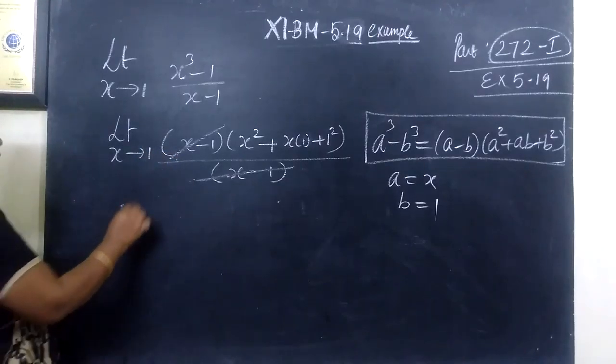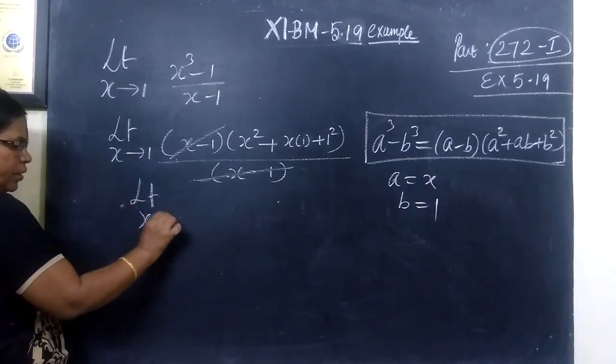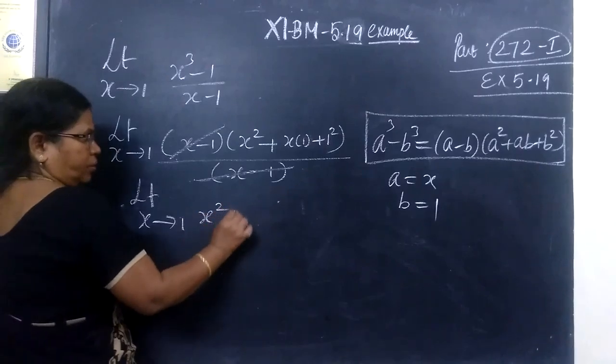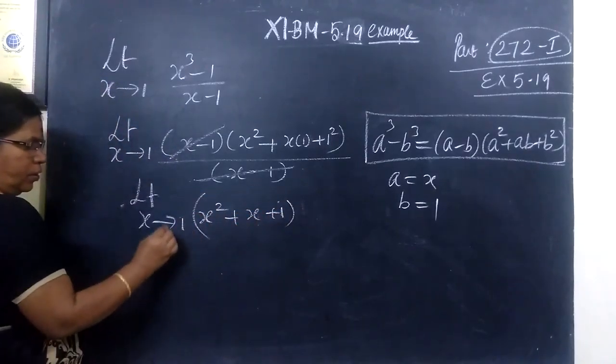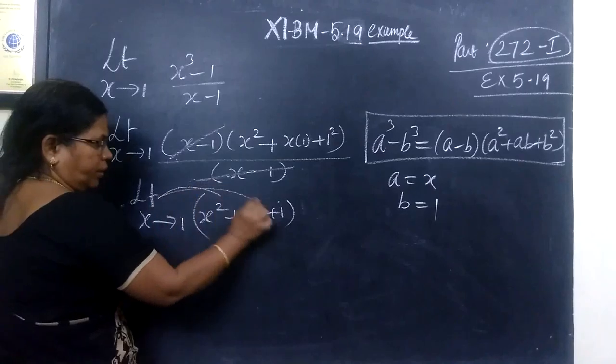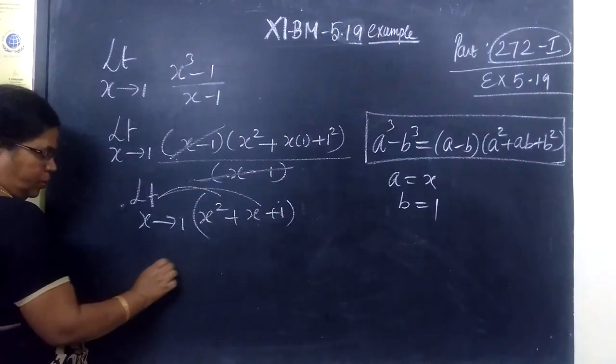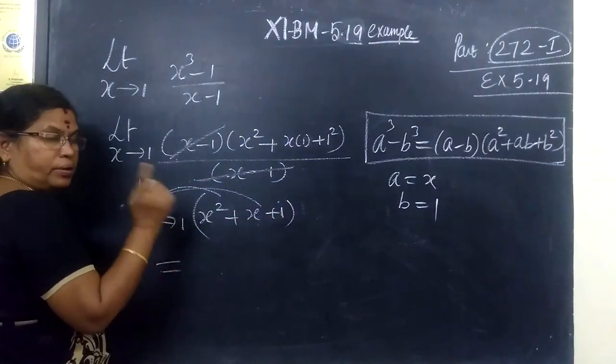Here you are writing x minus 1. So x minus 1, x minus 1 cancels. So limit x tends to 1, x square plus x plus 1. Now you can apply the limit for x and substitute 1. So that is equal to, instead of x, substitute 1.